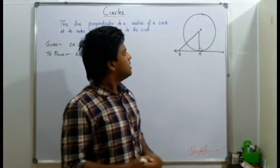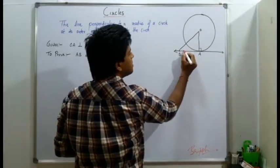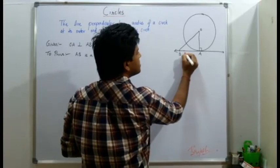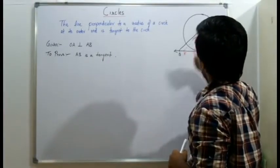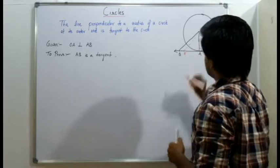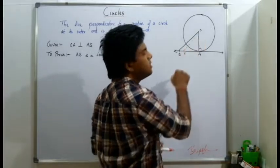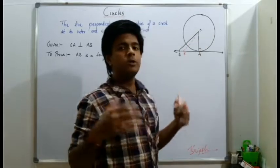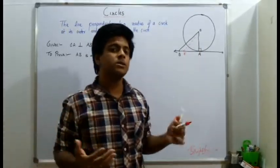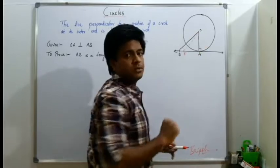What I will do? I'll mark a point, suppose B dash. I'll mark a point B dash here and I'll try to join them. In this way, BA will become our hypotenuse. This is perpendicular to the base. This is hypotenuse and we already know that hypotenuse is always greater than the other two sides. So OB dash will be greater than AB dash and OA.